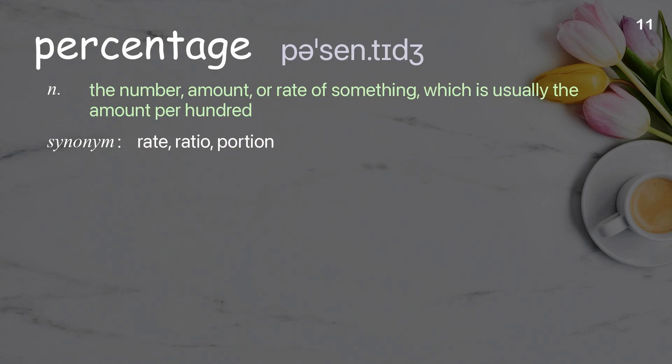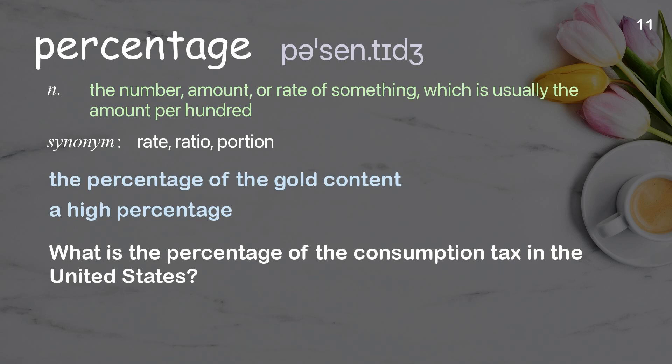Percentage: the number, amount, or rate of something, which is usually the amount per hundred. Examples: the percentage of the gold content, a high percentage. What is the percentage of the consumption tax in the United States?